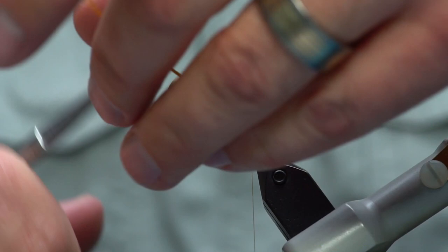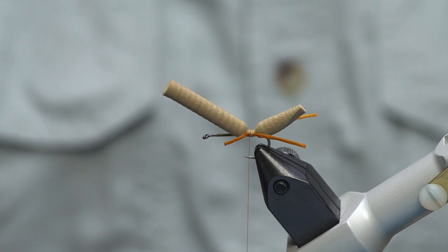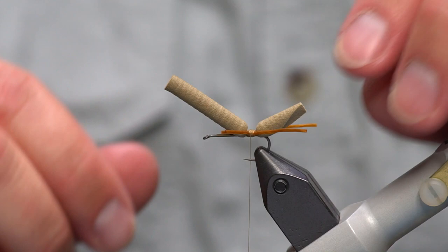If you wanted to make this really elaborate you could actually tie knots in those legs and make them hang down. I've fished both and I don't think that it makes any difference to the fish, but it does make kind of a cool looking fly to have the legs that are knotted.